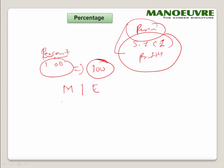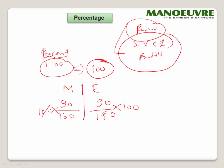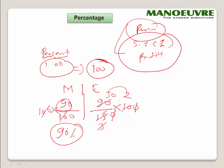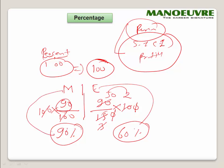Suppose you have two subjects: Maths and English. In Maths you got 90 out of 100, and in English you got 90 marks out of 150. To calculate percentage, we multiply by 100. For Maths: 90/100 × 100 = 90%. For English: 90/150 × 100 — the zeros cancel, giving us 60%.